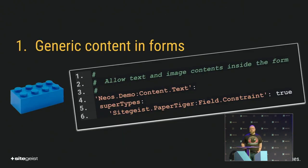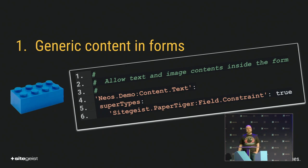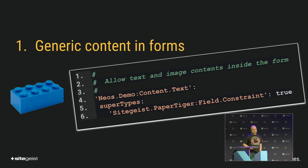So, how to make use of this for your own? The most simple case is: I want to allow a text inside a form, and it does not get more simple than that. You just apply the field constraint to your node type. That's all you have to do. No adjustments to rendering, no further configuration is needed. It is just like what you would do to allow it in any other content collection.